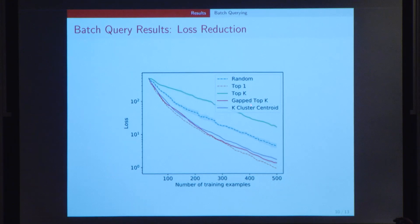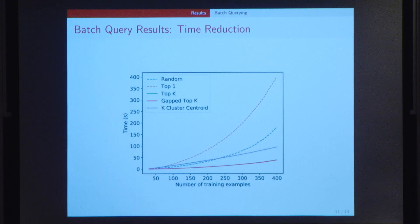In comparison, if you look at the gap top-K and the K-cluster centroid algorithm, they seem to be performing almost as well as the sequential learning algorithm with the gap top-K algorithm slightly ahead because it minimizes the loss slightly faster. But the main reason for using batch querying is not only for reducing the loss but for reducing the time taken for active learning. So let's have a look at the time plots.